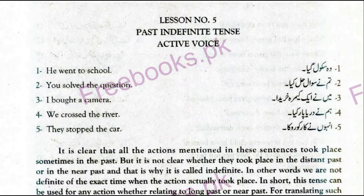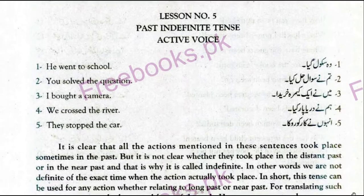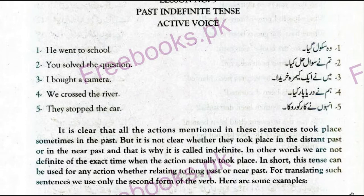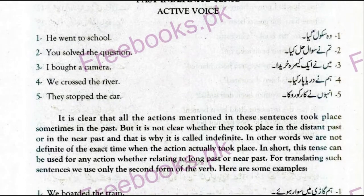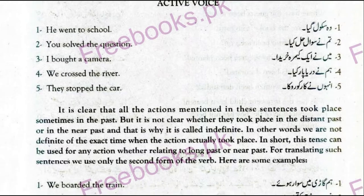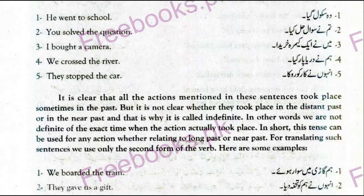As is clear from the examples, all the actions mentioned in these sentences took place sometime in the past, but it is not clear whether they took place in the distant past or in the near past. That is why it is called 'indefinite' — indefinite means it is not clear, we don't know when the action happened. That is why the name of the tense is Past Indefinite.